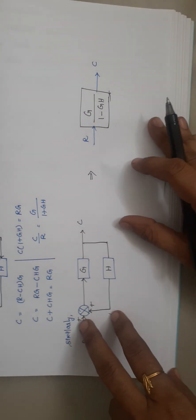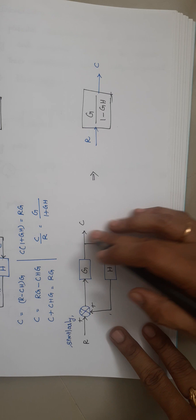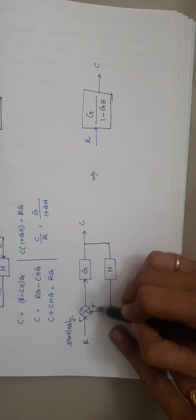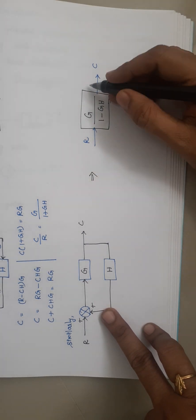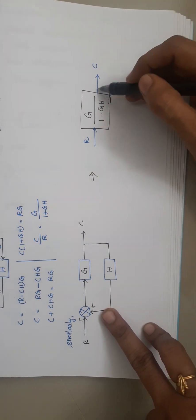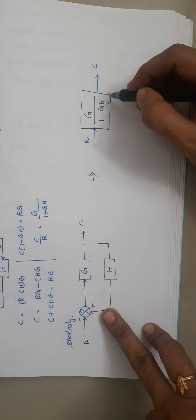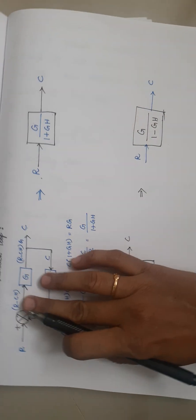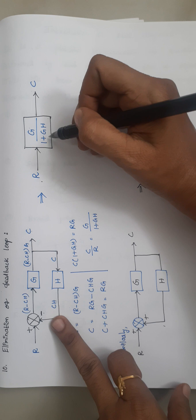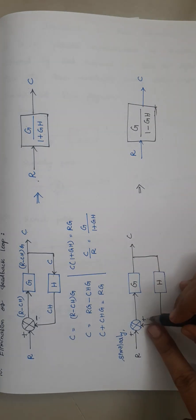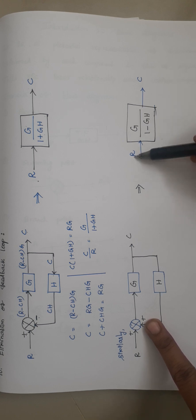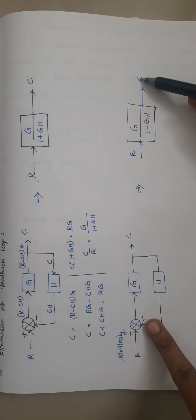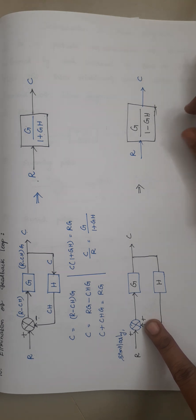Similarly, for positive feedback the output becomes G/(1 − G·H). For negative feedback the result is G/(1 + G·H); for positive feedback just reverse the sign to get G/(1 − G·H). The input is R and the output is C. Keep these things in mind.